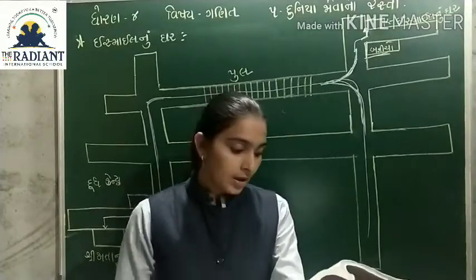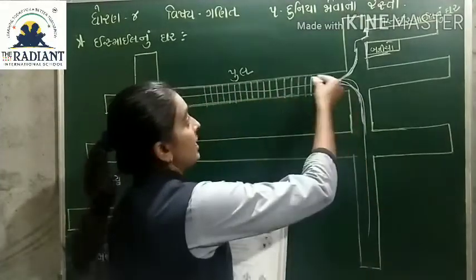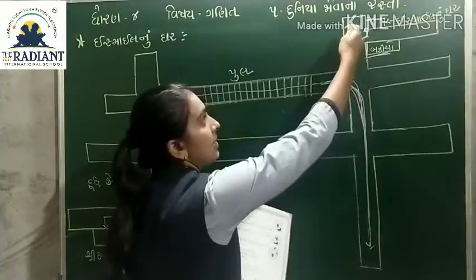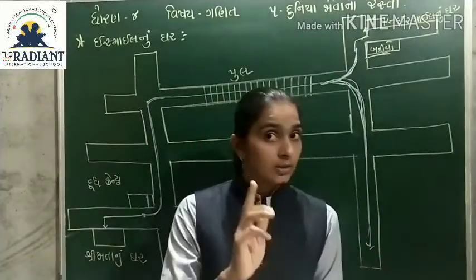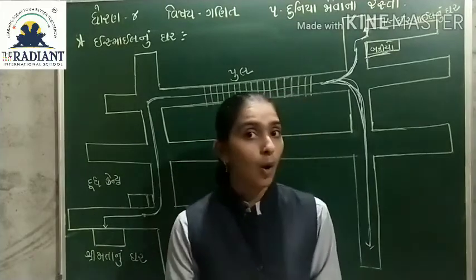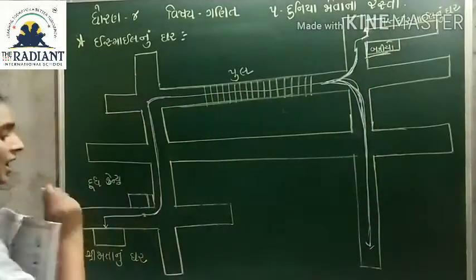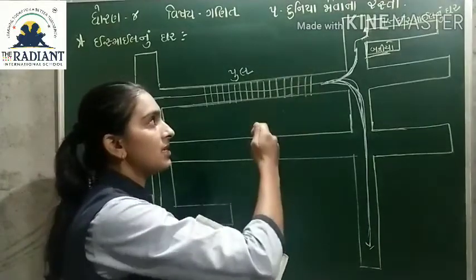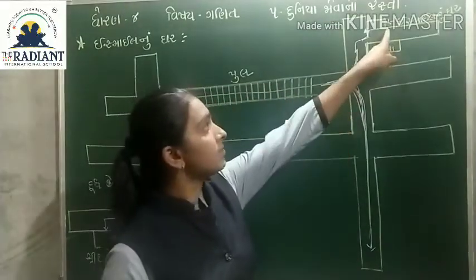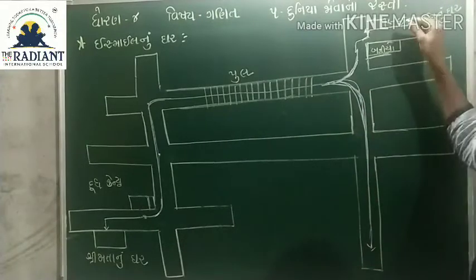બીજો-પ્ર-શ: જો ઇ-સ-ઈ-ઓ-ઈ-ઈ-ઉ-ઉ-ઈ-ઓ-ઉ-ઈ-ઉ-ઈ-ઉ-ઈ-ઉ ઉ-ઈ-ઉ-ઈ-ઉ-ઓ-ઈ-ઉ-ઈ-ઓ-ઈ-ઉ-ઈ-ઉ-ઈ-ઉ-ઈ-ઉ-ઈ-ઉ ઉ-ઈ-ઉ-ઈ-ઉ-ઓ-ઈ-ઉ-ઈ-ઓ-ઈ-ઉ-ઈ-ઉ-ઈ-ઉ-ઈ-ઉ-ઈ-ઉ. ઇ-ઉ-ઓ-ઈ-ઉ-ઉ-ઈ-ઓ-ઈ-ઉ-ઈ-ઉ-ઈ-ઉ-ઈ-ઉ-ઈ-ઉ-ઈ-ઉ. ઈ-ઉ-ઓ-ઈ-ઉ-ઉ-ઈ-ઓ-ઈ-ઉ-ઈ-ઉ-ઈ-ઉ-ઈ-ઉ-ઈ-ઉ-ઈ-ઉ ઈ-ઉ-ઓ-ઈ-ઉ-ઉ-ઈ-ઓ-ઈ-ઉ-ઈ-ઉ-ઈ-ઉ-ઈ-ઉ-ઈ-ઉ-ઈ-ઉ.